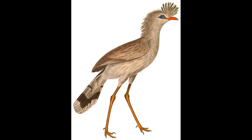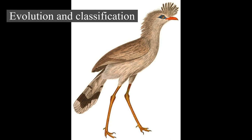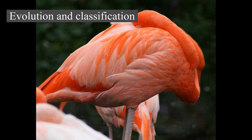Evolution and Classification. The first classification of birds was developed by Francis Willoughby and John Ray in their 1670 six-volume ornithology. Carl Linnaeus modified that work in 1758 to devise the taxonomic classification system currently in use. Birds are categorized as the biological class Aves in Linnaean taxonomy. Phylogenetic taxonomy places Aves in the clade Theropoda.